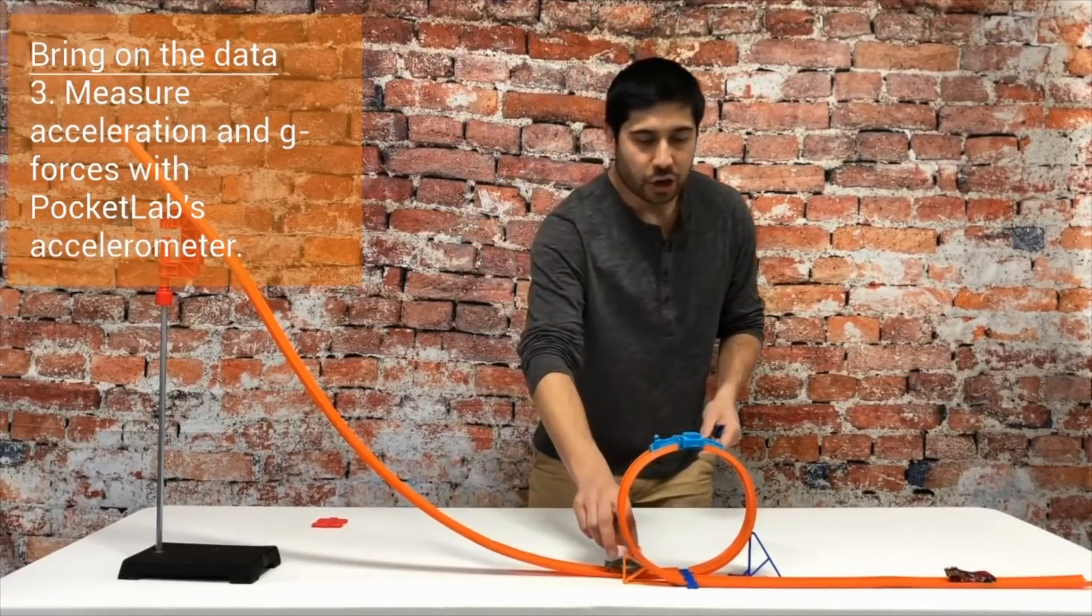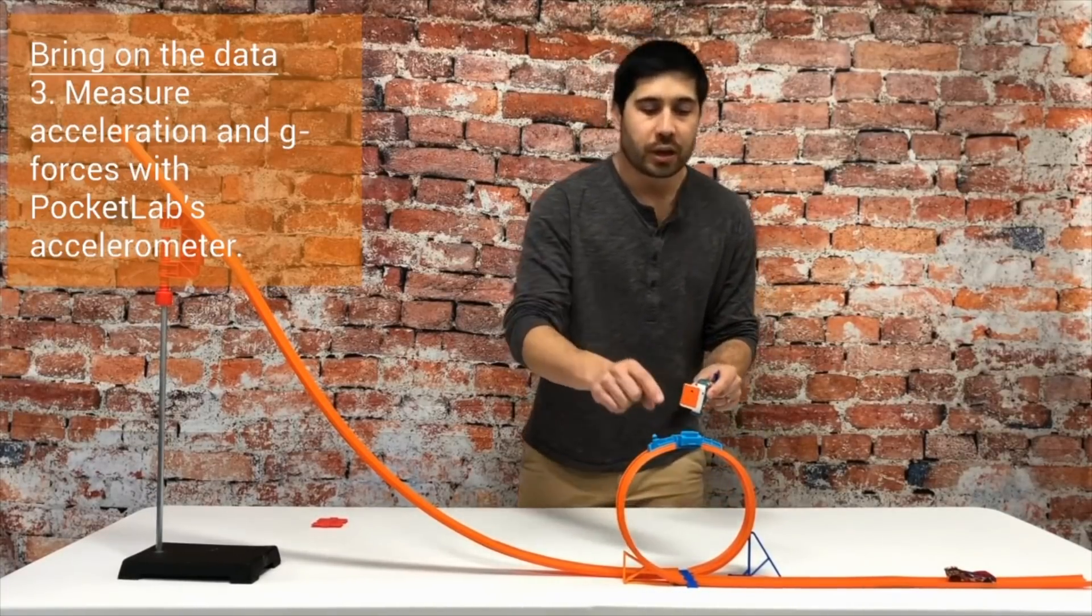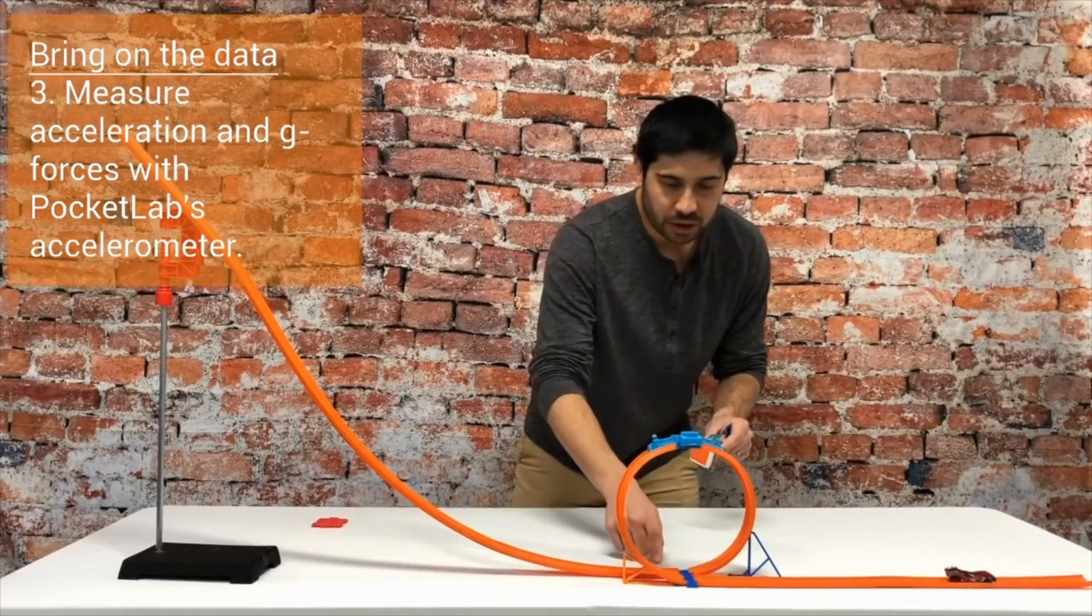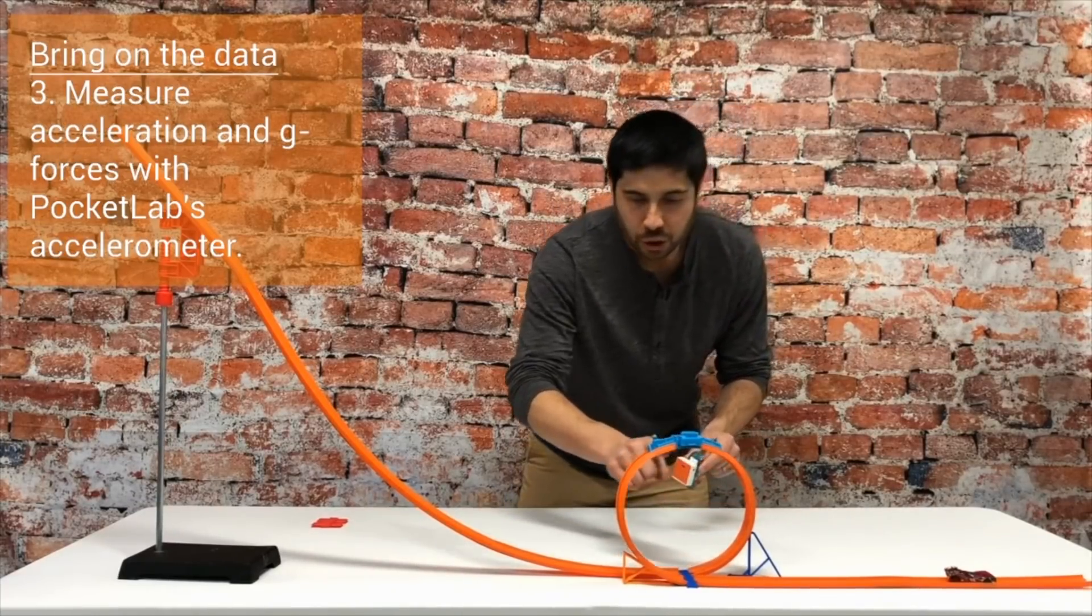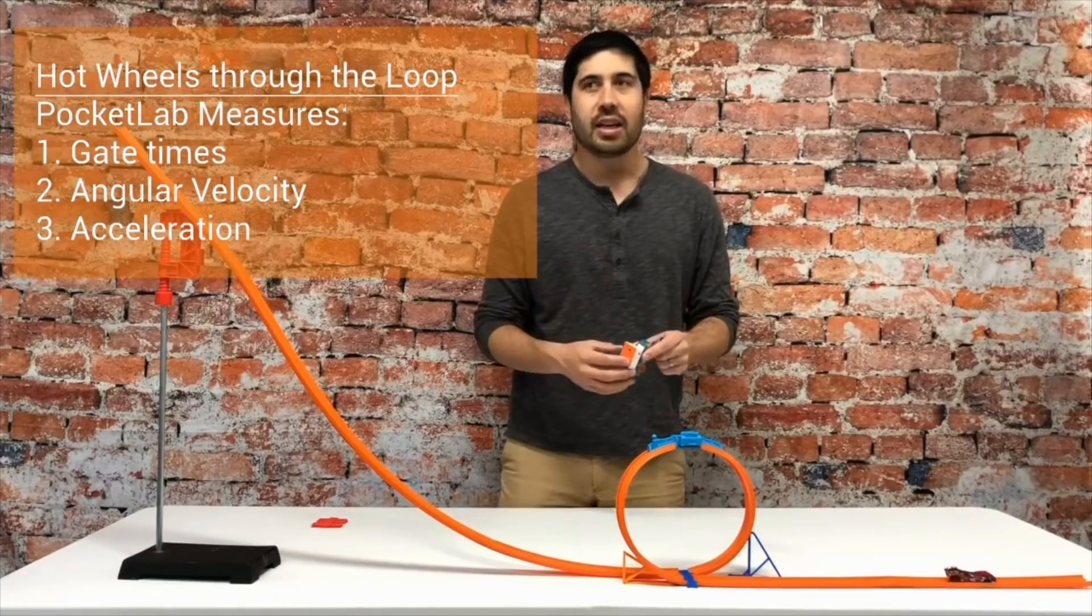The Pocket Lab also has an accelerometer. So as the car goes through this loop, we can use the accelerometer to directly measure the g-forces that you would feel if you were a person going through this roller coaster loop. And we'll look at all of that data in this video.